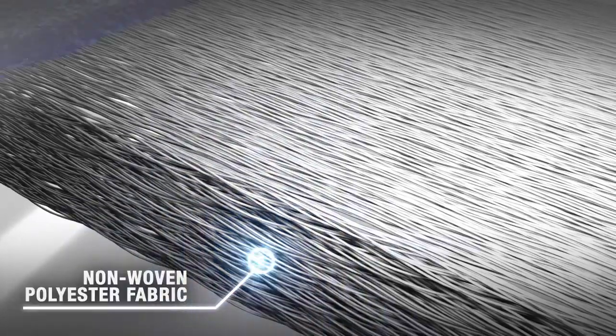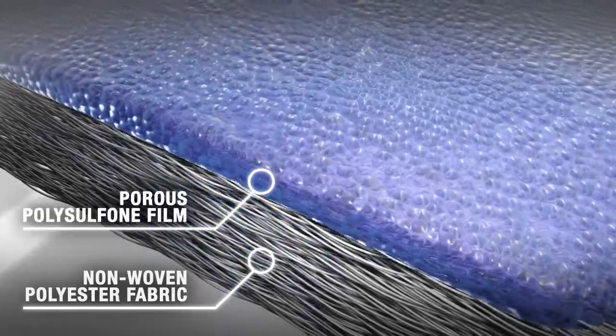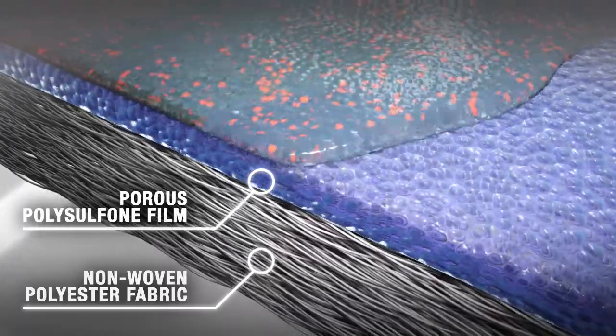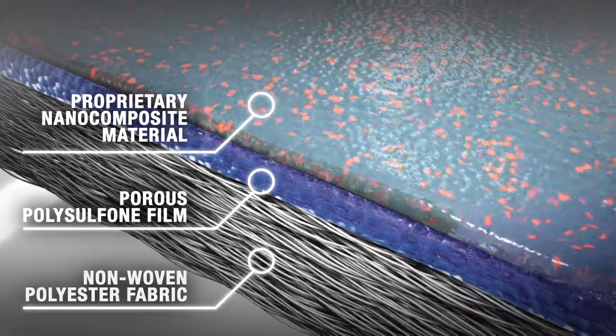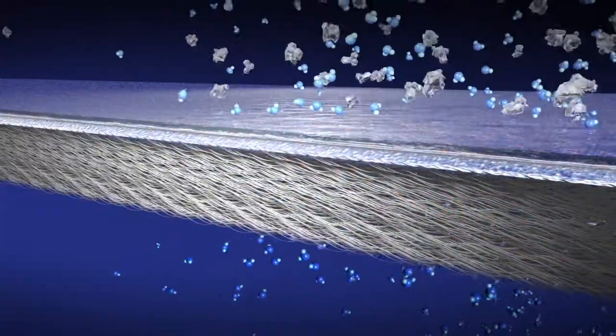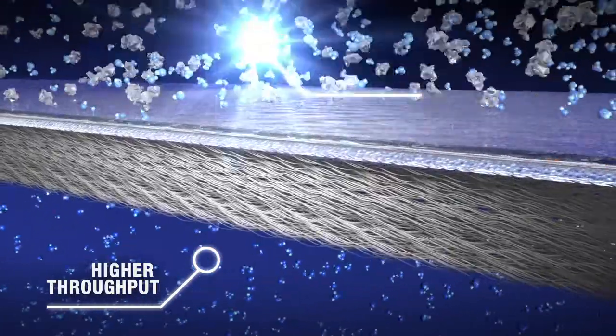Nano H2O's patent-pending technology encapsulates benign nanoparticles within the thin-film polyamide layer. Beginning with a non-woven polyester fabric, a layer of porous polysulfone film is cast, followed by a layer of Nano H2O's proprietary nanocomposite material. This exclusive process increases membrane permeability by 50 to 100% over conventional membranes, while matching best-in-class salt rejection.